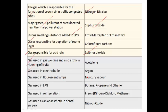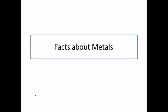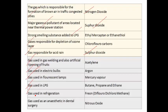Gas used in fluorescent lamps is mercury vapor. Gas used in LPG is butane, propane, and ethane. Gas used in refrigeration is Freon (difluorodichloromethane). Gas used as an anesthetic in dental surgery is nitrous oxide. So friends, with this I have covered very important questions related to gases. All these questions were taken from previous papers. Please do revision at least two to three times so that you can easily remember. Subscribe to my channel and you can see the links below in the description topic-wise. Thank you friends.